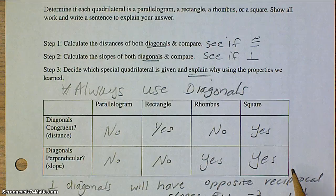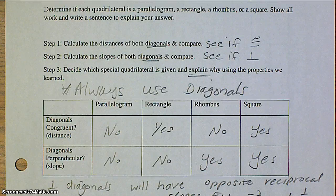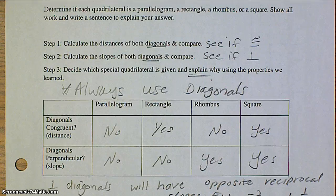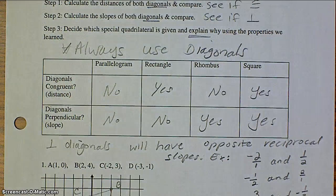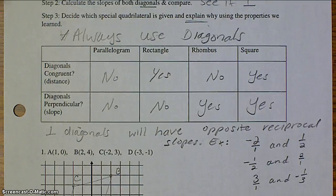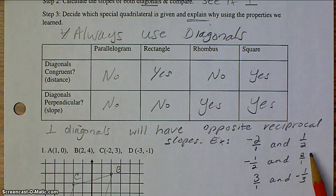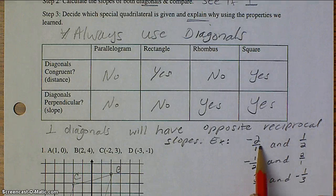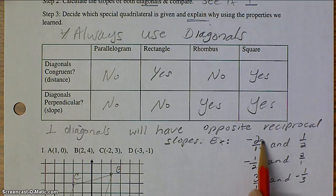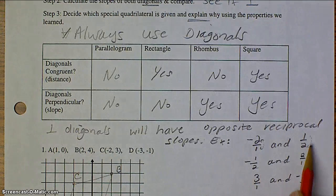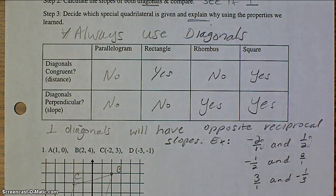Just to recap from algebra 1, how do we decide if the slopes create perpendicular diagonals? Perpendicular diagonals will always have opposite reciprocal slopes. Here are some examples: negative 2 and 1 half. Those are opposites because this one is negative and this one is positive. They are reciprocals as well because if you exchange the numerator and denominator, you will have the other slope.